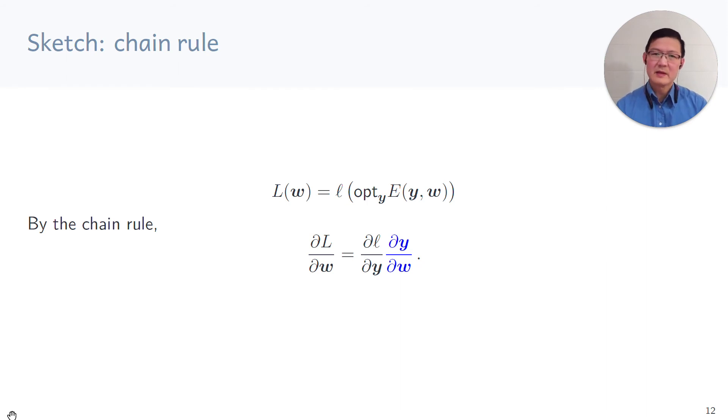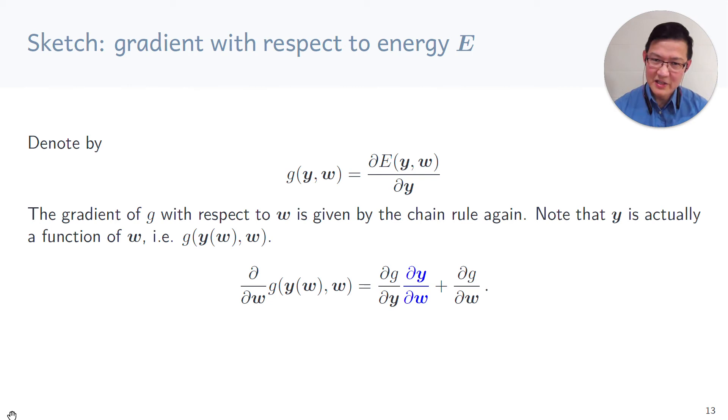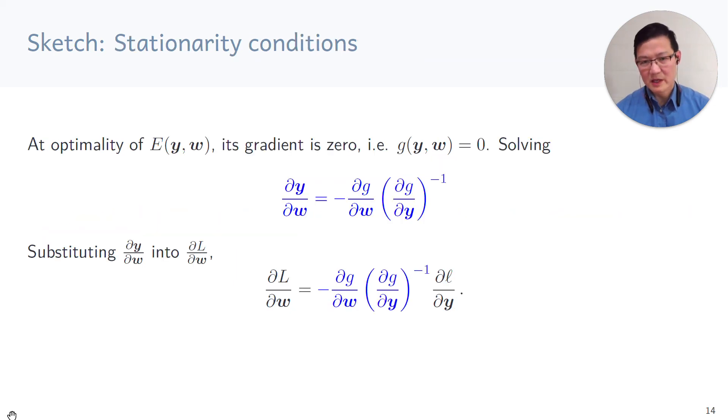Now this second term here written in blue is slightly more complicated and we'll try and unpack this. This is where it becomes interesting. To simplify notation we denote the gradient of the energy with respect to Y as G. Now we can compute the gradient of G with respect to w by the chain rule. Note the reason this is difficult is because Y is actually a function of w, so we actually have to use the chain rule. So the partial derivative of G with respect to w can be written out in the following. And note that we again have this term that we're interested in, which is the partial derivative of Y with respect to w. Now we know that at optimality, remember we are optimizing over the energy to find the best predictor. So we know that at optimality, the gradient with respect to G is 0.